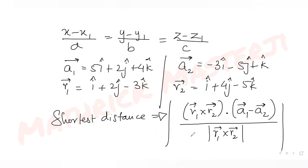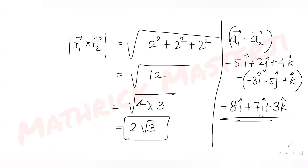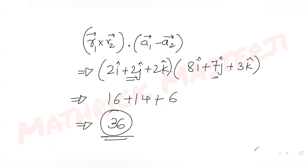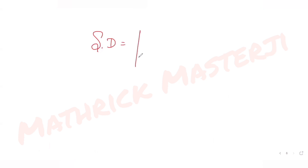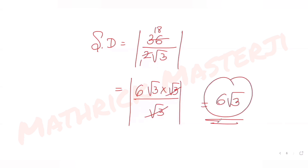Now we find the shortest distance: it equals the absolute value of the dot product divided by the mod of the cross product, which is 36 / (2√3). Simplifying: 36 / (2√3) = 18/√3 = 18√3/3 = 6√3. So the shortest distance between the two lines is 6√3.